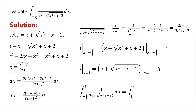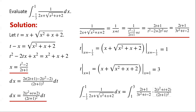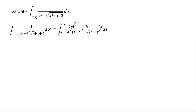So the integral of 1 over (2x plus the square root of x squared plus x plus 2) dx, from negative one-third to 1, equals the integral from 1 to 3. The integrand is (2t plus 1) over (3t squared plus t minus 2), times dx which equals 2(t squared plus t plus 2) over (2t plus 1) squared, dt. The factor (2t plus 1) in the numerator and denominator cancels.